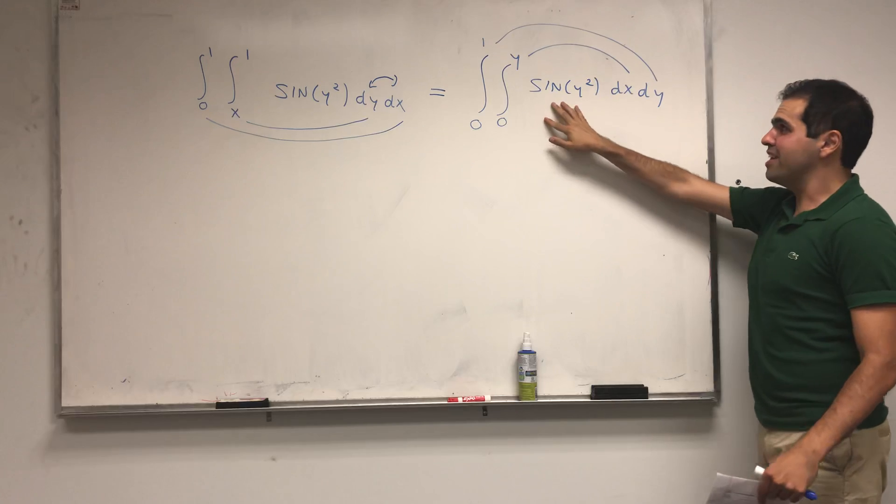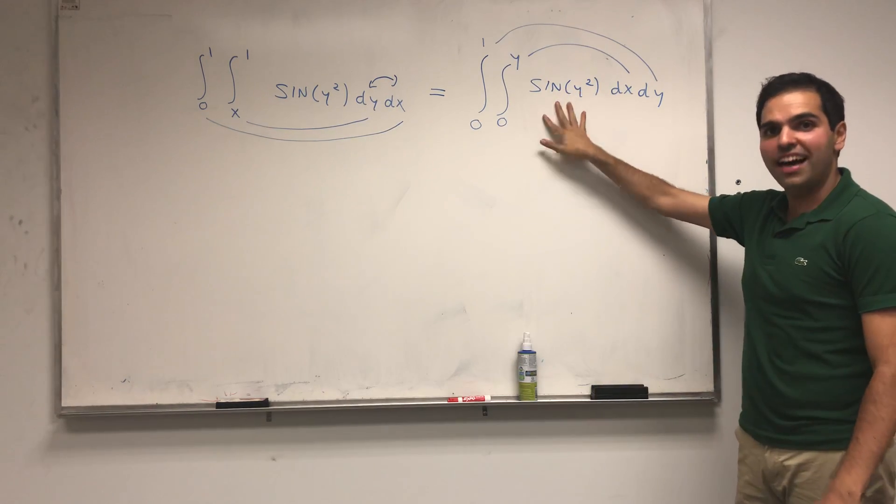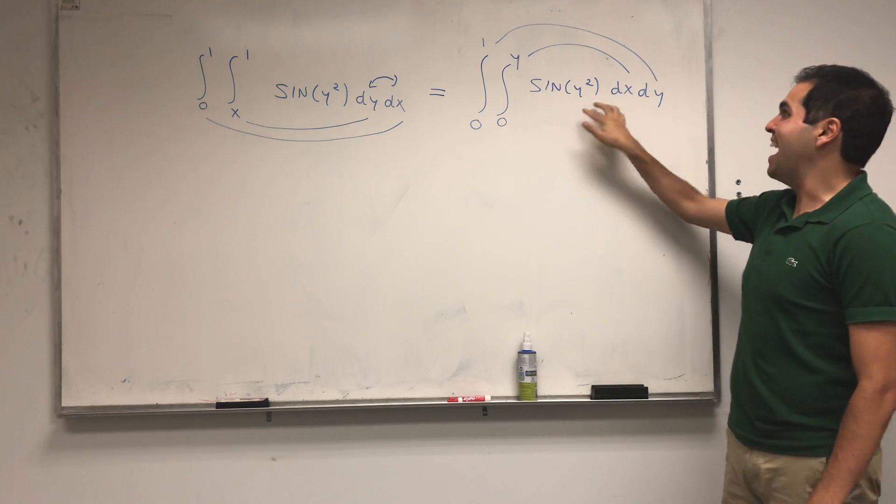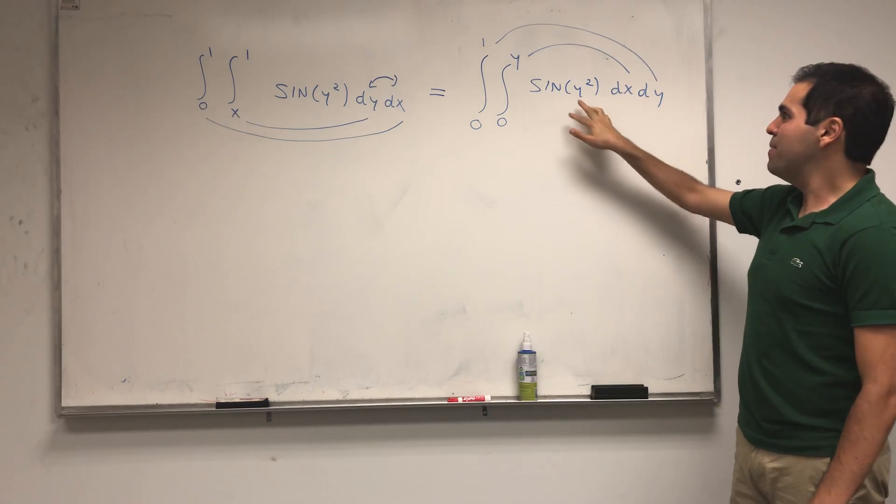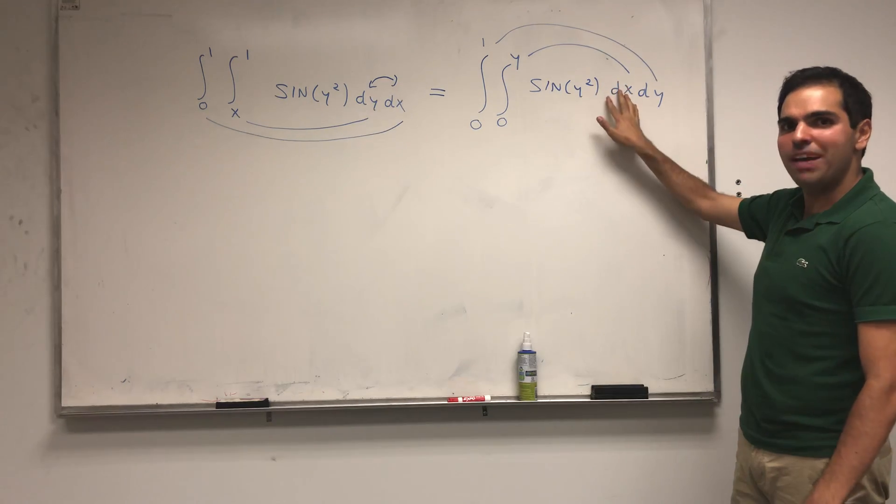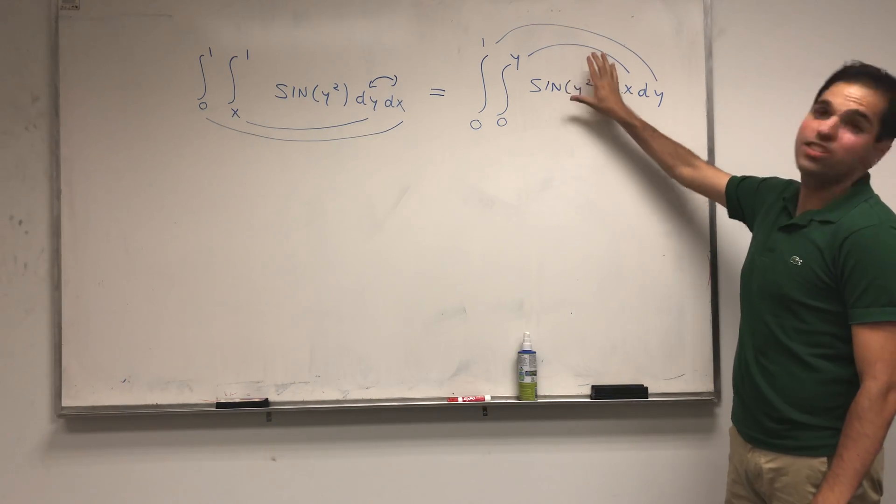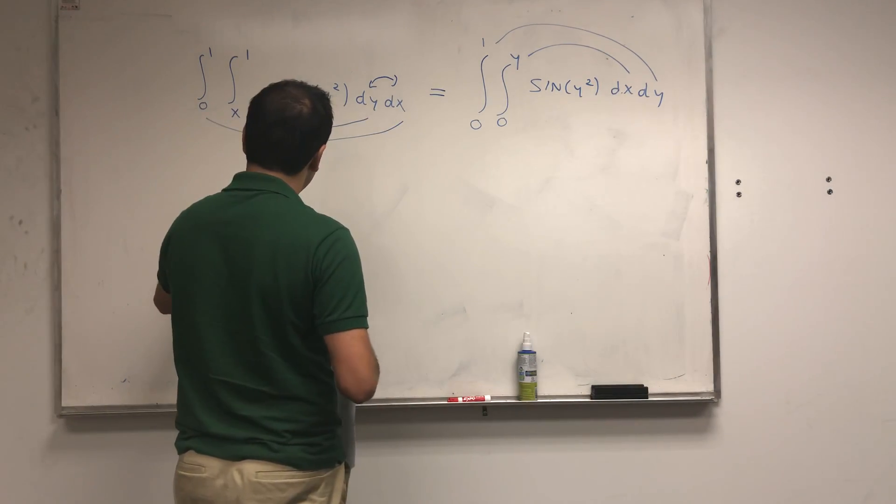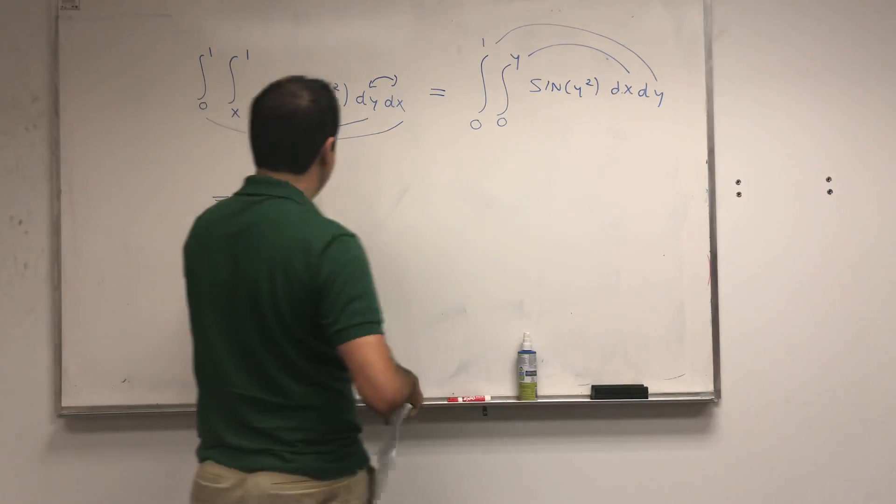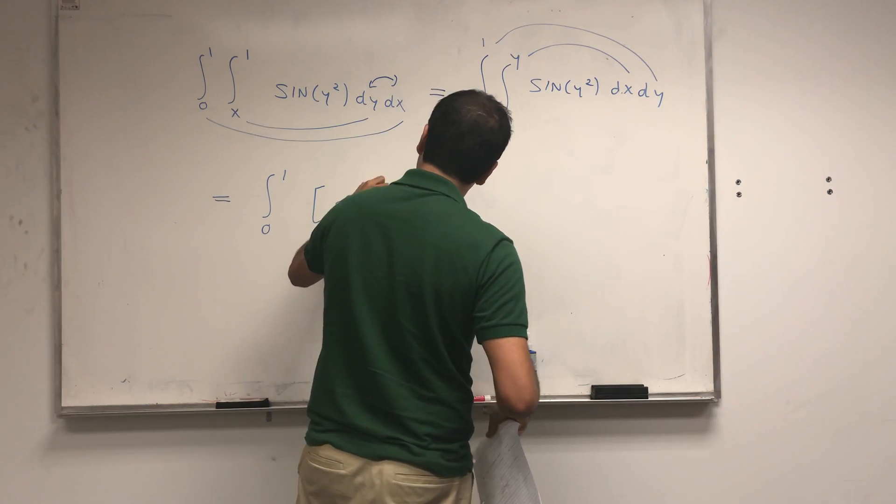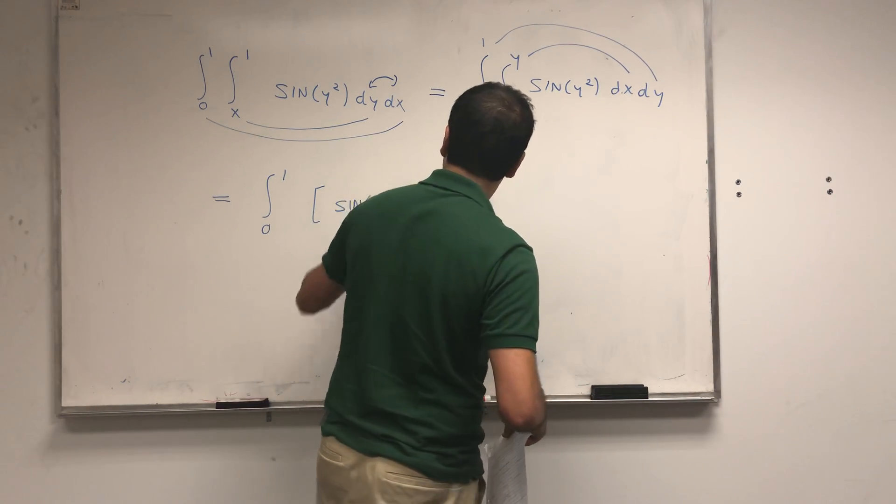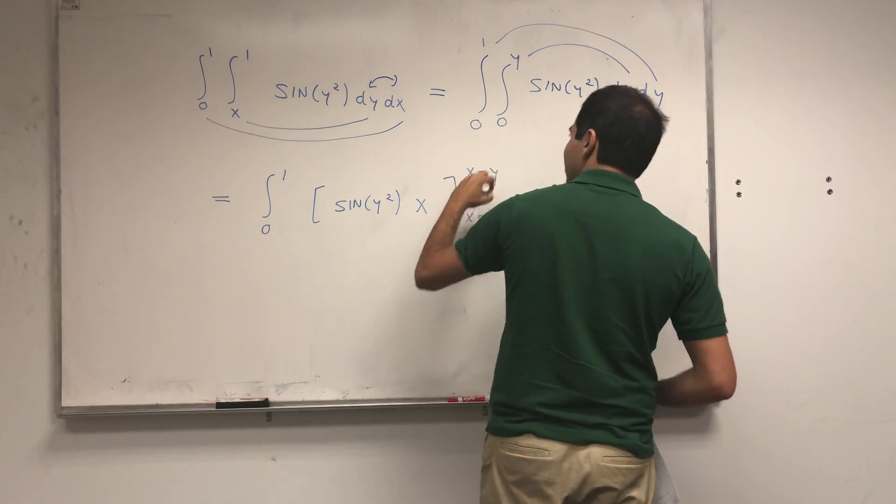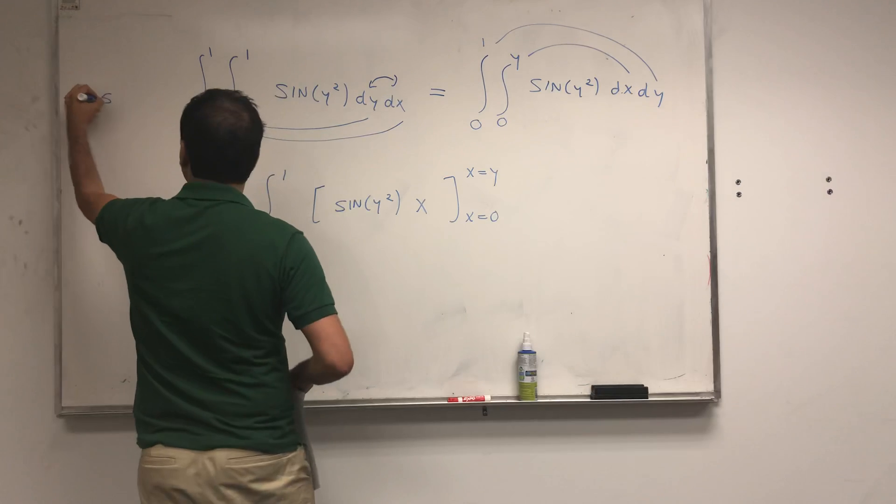And here's the cool thing. We have this integral sine of y squared which was impossible to integrate, but now we can actually integrate it because this is easy to integrate with respect to x because this just becomes a constant. And therefore, with respect to x, the anti-derivative of sine y squared is just sine y squared x, and that's from x equals to zero to x equals to y.